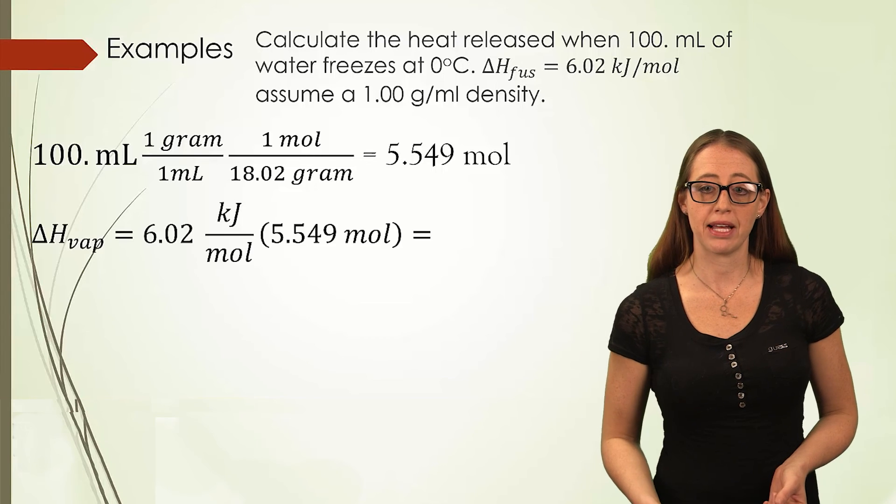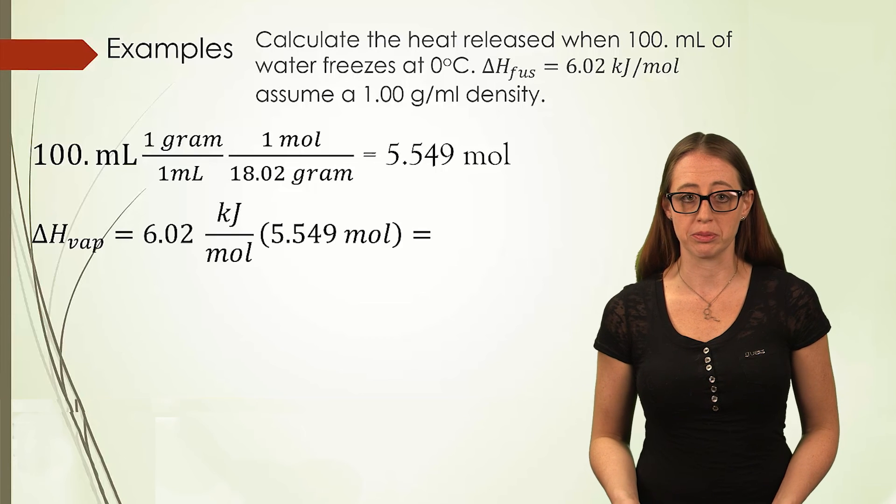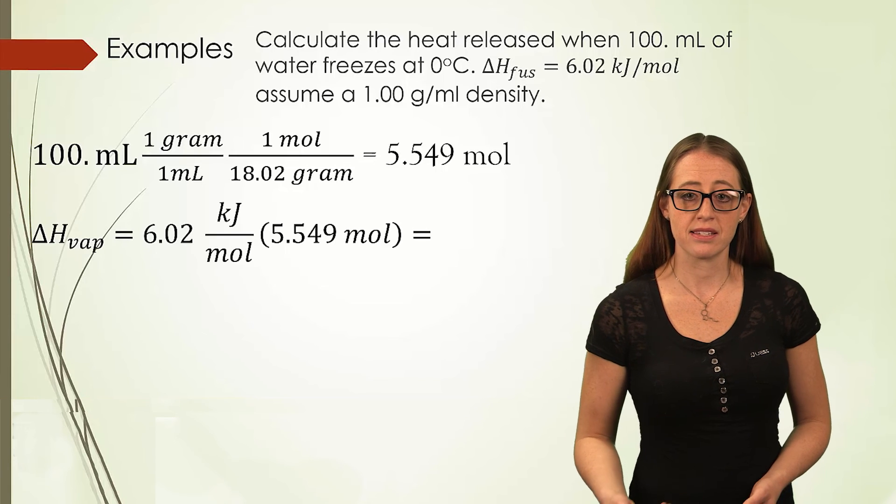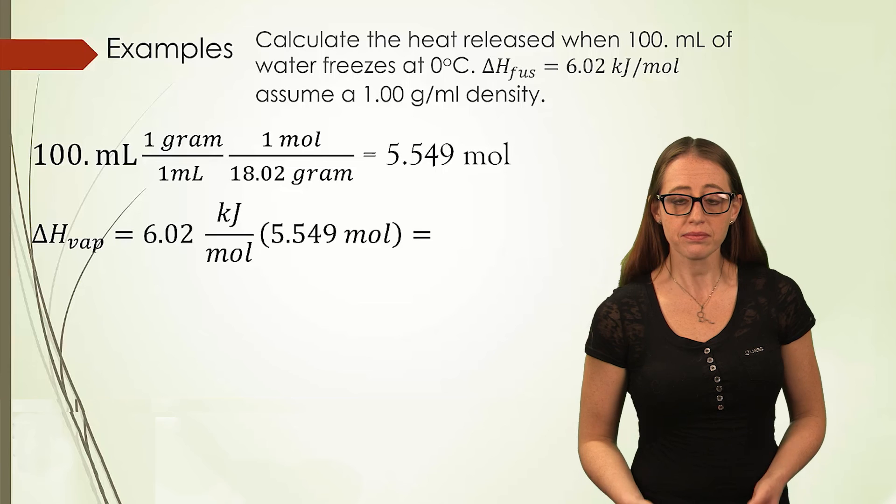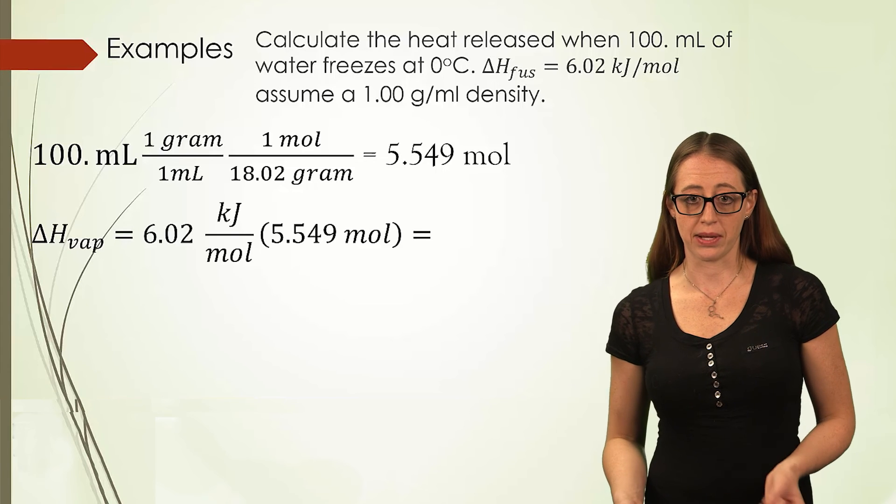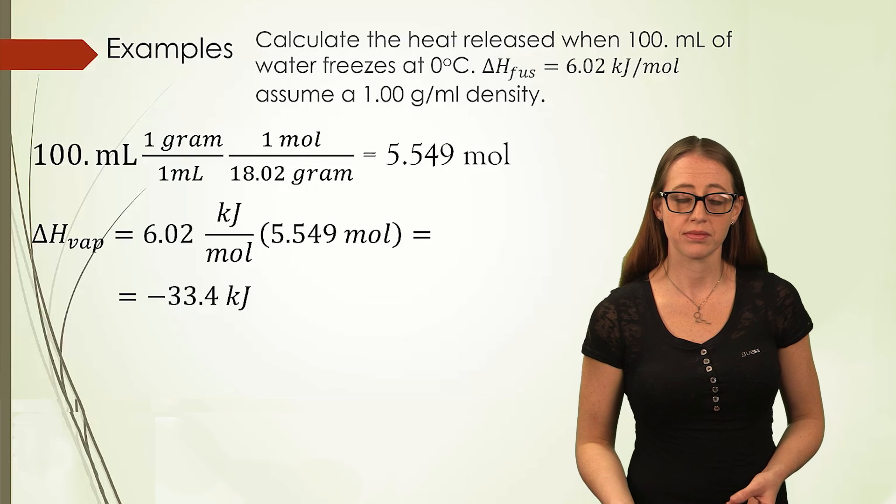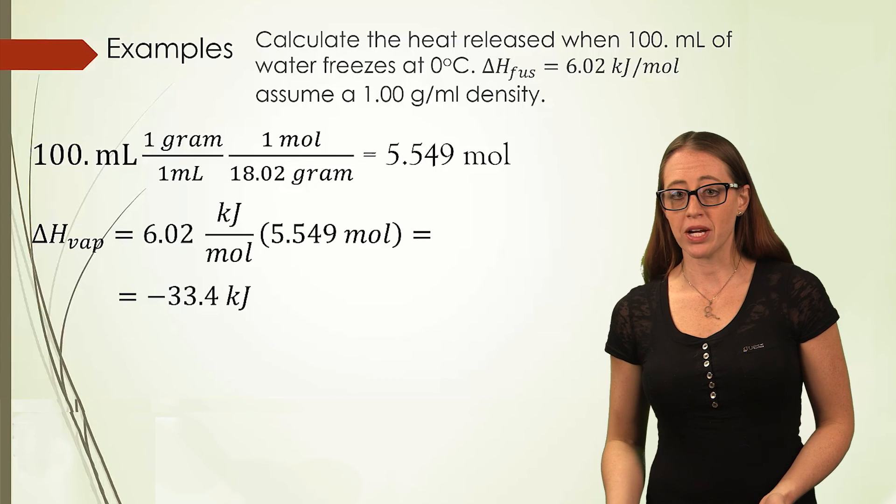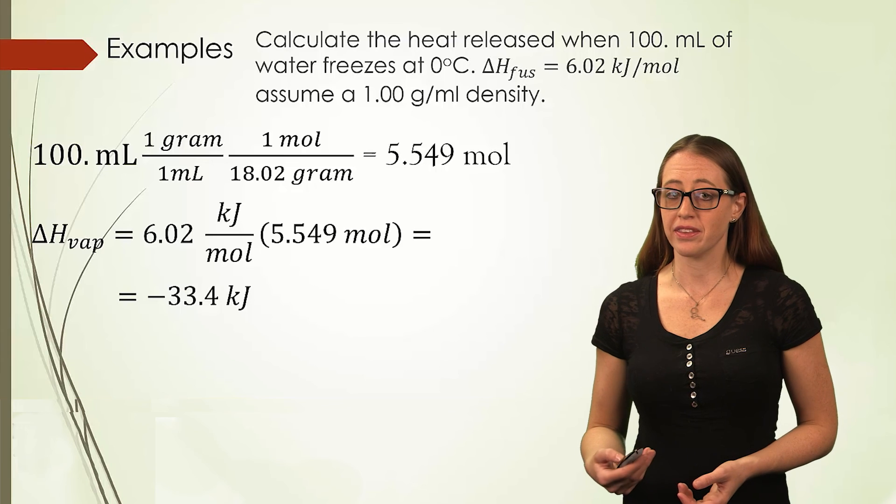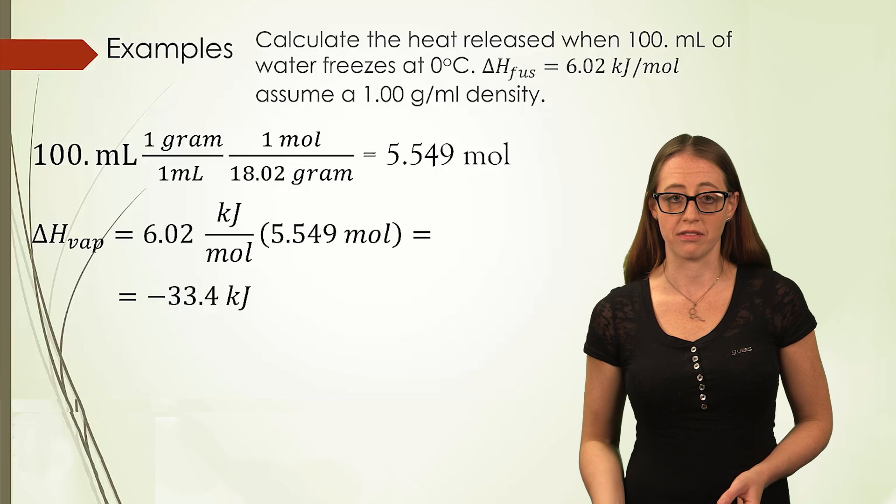Then we will multiply that by the 6.02 kJ per mole, because this is the heat released. We will add the negative sign as well. This gives us a negative 33.4 kJ. It was the exact same process. We simply changed the constant that we used to solve for the answer.